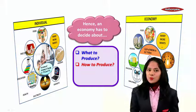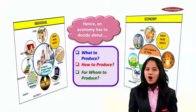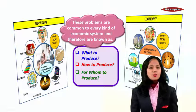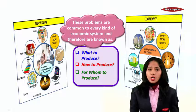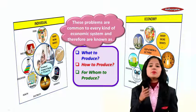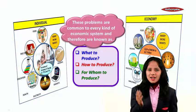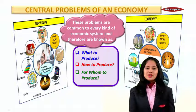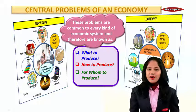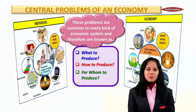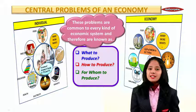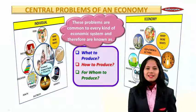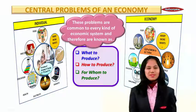So an economy has to make some important decisions — it has to decide about what to produce, how to produce, and for whom to produce. As these problems are common to every kind of economic system and every country in the world, they are known as the central problems of an economy. In the next module, we will understand the causes of these basic and central problems.